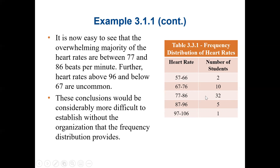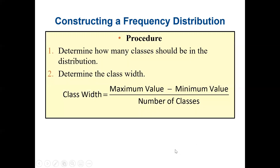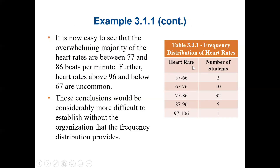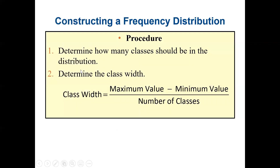Without organizing the data set it's very difficult to identify that 77 to 86 contains the majority of students — it's possible but it takes time, counting each individual value. When we use the frequency distribution everything is organized for us. Now, how do we construct one? The first step is to determine how many classes should be in the distribution.